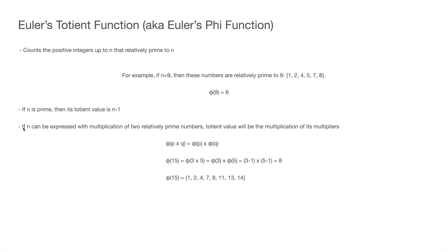Another important feature of the totient function, which we actively use in RSA, is that if n can be expressed as the product of two relatively prime numbers, then φ(n) equals the product of their individual totient values. In other words, if p times q equals n, instead of counting all positive integers up to n, I can find φ(p) and φ(q) separately and multiply them. For example, to find φ(15), I express 15 as 3 times 5, giving φ(3) times φ(5), which equals 2 times 4 equals 8.